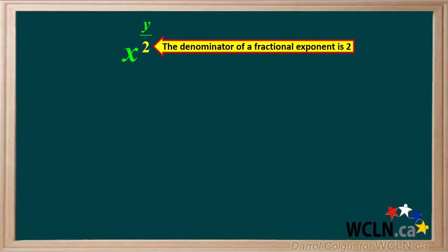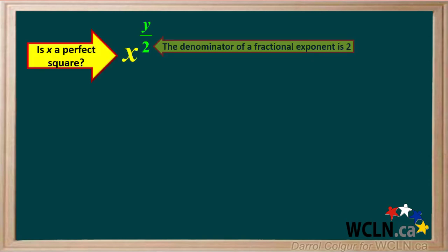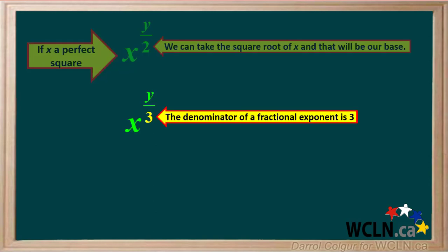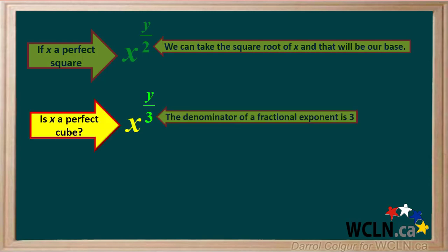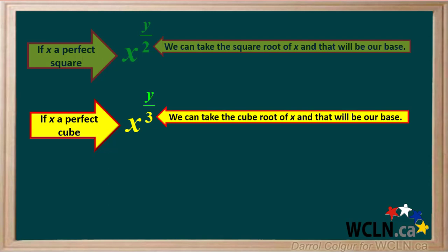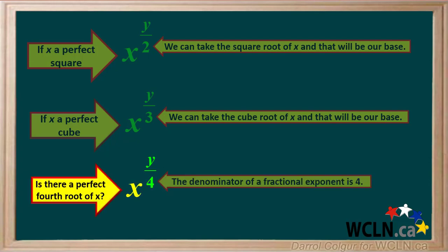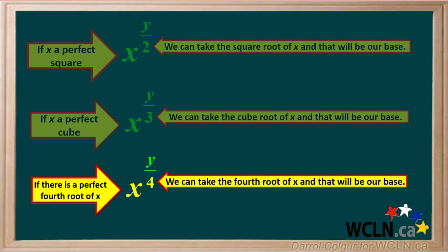To summarize, whenever we have an expression where the denominator of a fractional exponent is 2, we check to see if x is a perfect square. If x is a perfect square, we can take the square root of x and that will be our base. This can also work for other perfect roots — for example, if the denominator is 4, check if there is a perfect fourth root of x. The fourth root of 16 is 2 and the fourth root of 81 is 3. Recognizing perfect square roots and other roots can help us a great deal when evaluating expressions with fractional exponents.